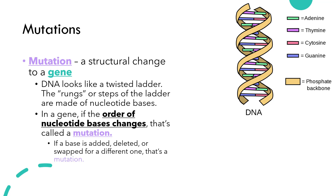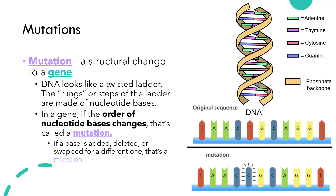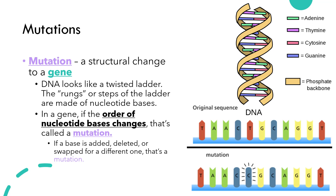A mutation occurs if a base is added, deleted, or swapped for a different one. For example, here are two DNA sequences. The top is the original, or what was started with. You can see the series of A's, T's, C's, and G's, which represent each different nucleotide base. For some reason, one of the thymines — a T — has changed to a cytosine, a C. That is a mutation.